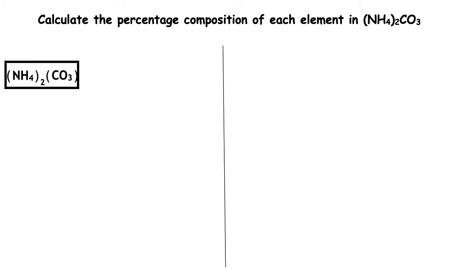For this example, we want to calculate the percentage composition of each element in (NH₄)₂CO₃. Again, with this example, we have two elements which are chemically joined together in a group ion, so we want to use page 8 and put a bracket around that. The GFM we're going to work out is for (NH₄)₂(CO₃). This will just make it a little bit easier when we're working out the GFM.